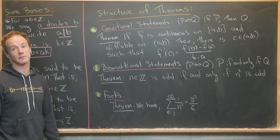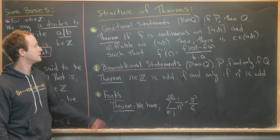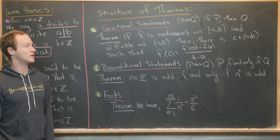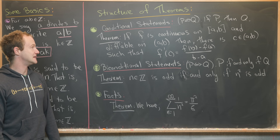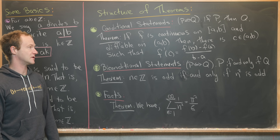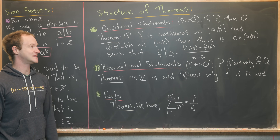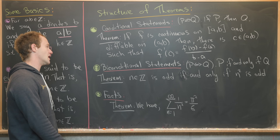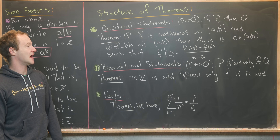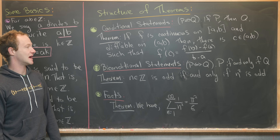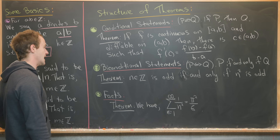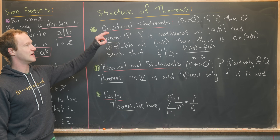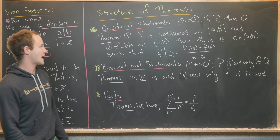This is the mean value theorem from calculus one. If F is continuous on the closed interval AB and differentiable on the open interval AB, then there is a C on the open interval such that F prime of C equals F of B minus F of A over B minus A. This is a conditional statement in if P then Q format.